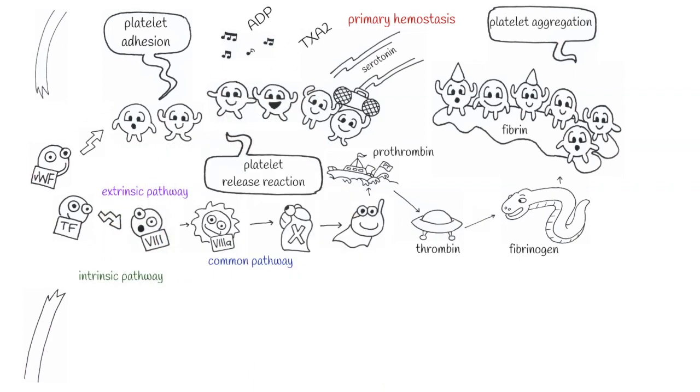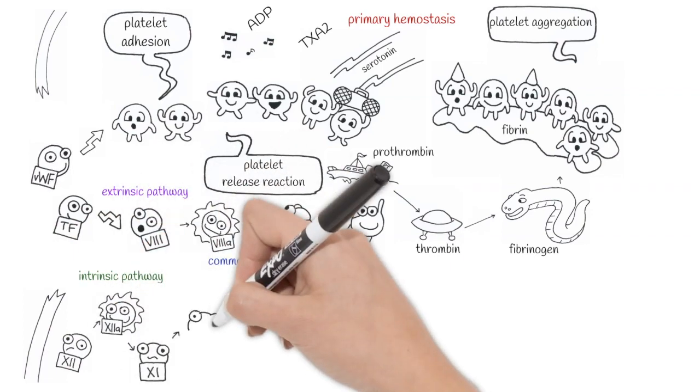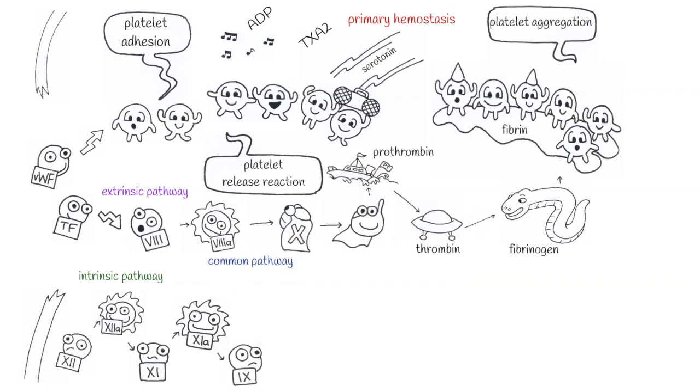The intrinsic pathway can be activated even without a broken vessel as it doesn't need tissue factor. Factor XII becomes factor XII activated that activates factor XI, that activates factor IX, that activates factor VIII, and we arrive again to factor X and to the common pathway.